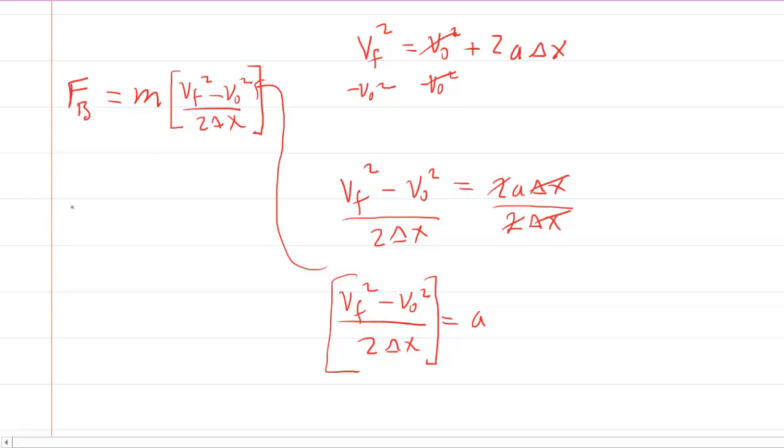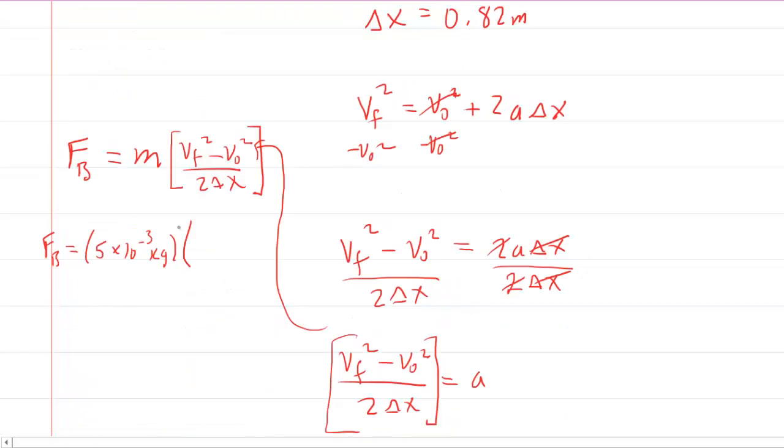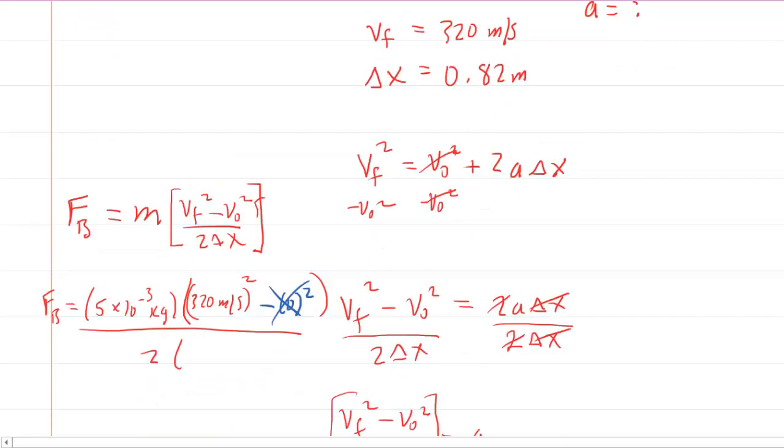Remember the mass was 5 grams and as noted we have to change that into kilograms. So to do that you just take your grams of 5 and multiply that by 10 to the minus 3. That puts it into kilograms for you. The final velocity that was written down in our list of information was 320 meters per second. Don't forget to square it. So we'll throw that in parentheses and put a squared. Now technically we have to subtract the initial velocity squared, but remember that that was just 0. So that's actually inconsequential. And then we'll divide this all by 2 times the linear displacement of the bullet which was the 0.82 meters.